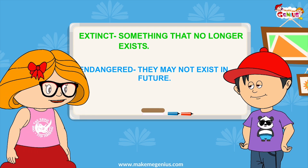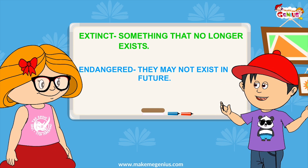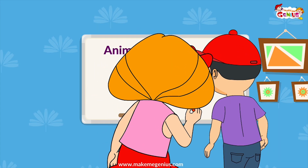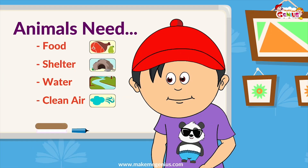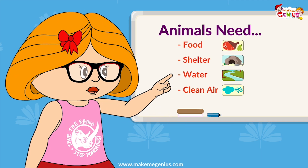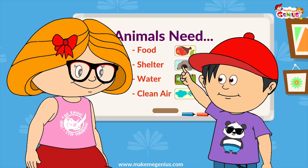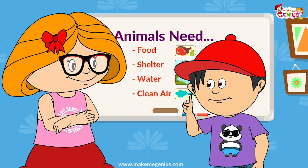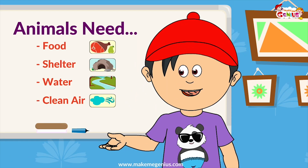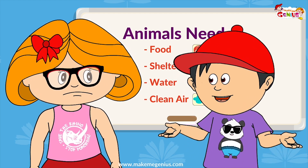There are many reasons for that, but first let's use this board and think about what animals need to live. I think food and shelter are very important. Yes, and what about water and clean air? So animals need water, food, shelter, and clean air. Correct! But do you know that many animals are not getting these? Animals are not getting food, and even animals' shelters are not safe.